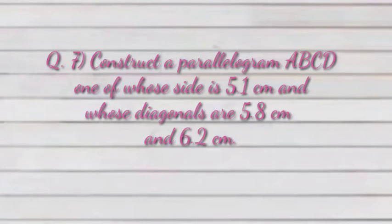Question number 7. Construct a parallelogram ABCD. One of whose side is 5.1 cm and whose diagonals are 5.8 cm and 6.2 cm.